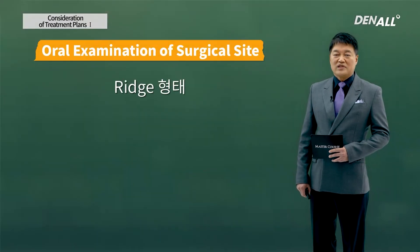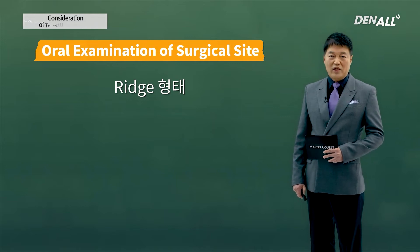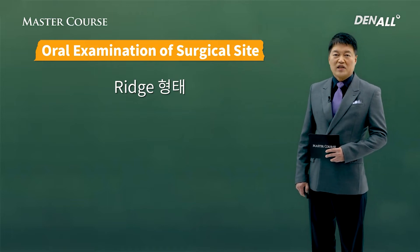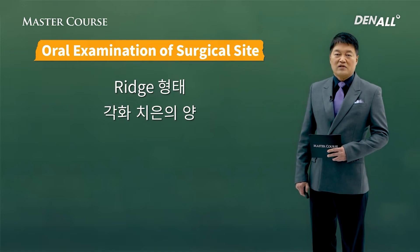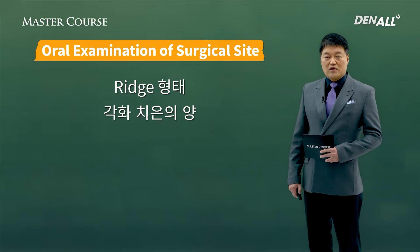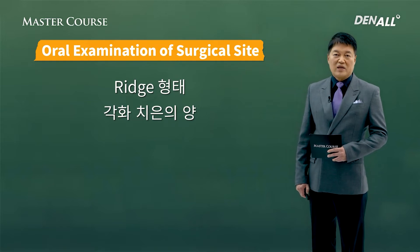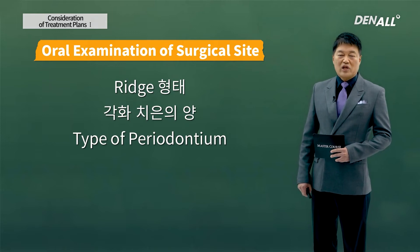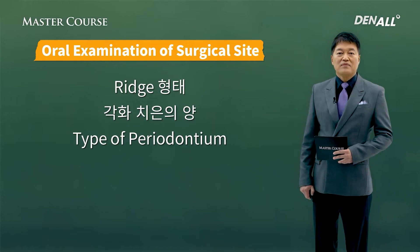The first item to check at the surgical site is the ridge shape — if it's good, the underlying bone structure is good and surgery can be done easily, but if not, there can be difficulties. Check if keratinized tissue is sufficient on both sides, as this is important in maintaining the implant afterward. Third is periodontium type — check whether it is thin or thick biotype, especially in the anterior region. For thin biotype, you need to pay more attention.